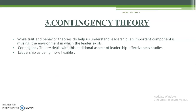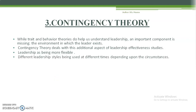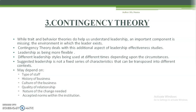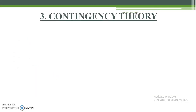Contingency theory deals with additional aspects of leadership effectiveness. It studies leadership as being more flexible, with different leadership styles being used at different times depending upon the circumstances. It's not that one leadership style will be used at every place, at every time, in every situation. Leadership is not a fixed series of characteristics — it depends upon the type of staff, employee behavior, history of business, culture of business, quality of relationships, nature of change, and accepted norms within the institution.